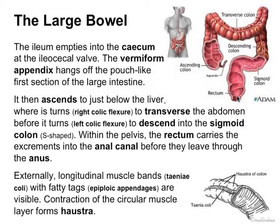On the outside, when we look at the outside of the structure, we see some longitudinal muscle bands called taeniae coli. They have fatty tags hanging off them called the epiploic appendages. Contraction of the circular muscles creates what we see as the haustra — these little pouch pieces. That's what we call the haustra. That's the large intestine.